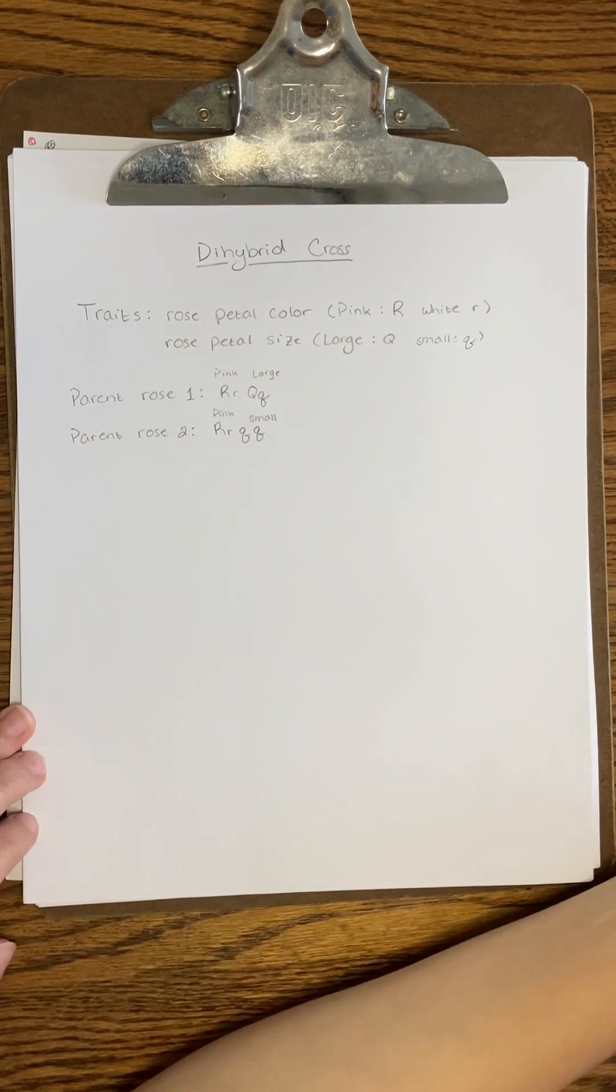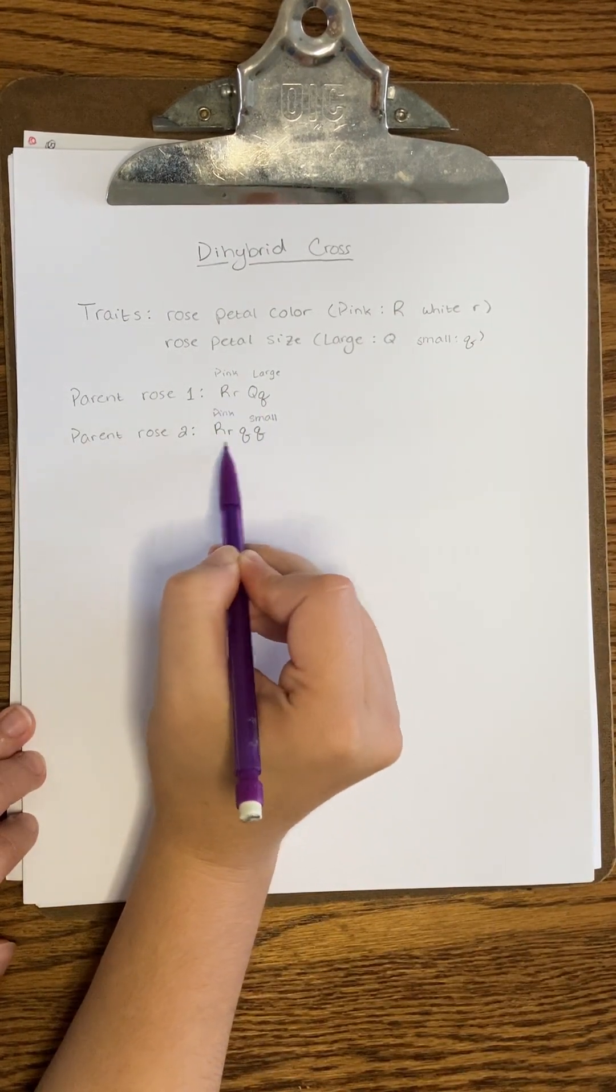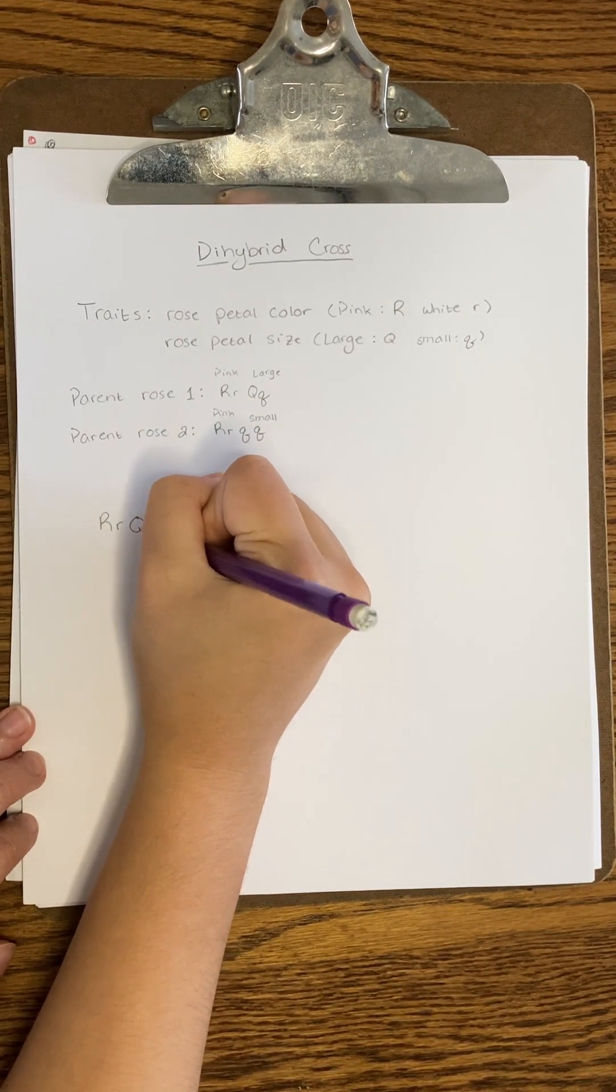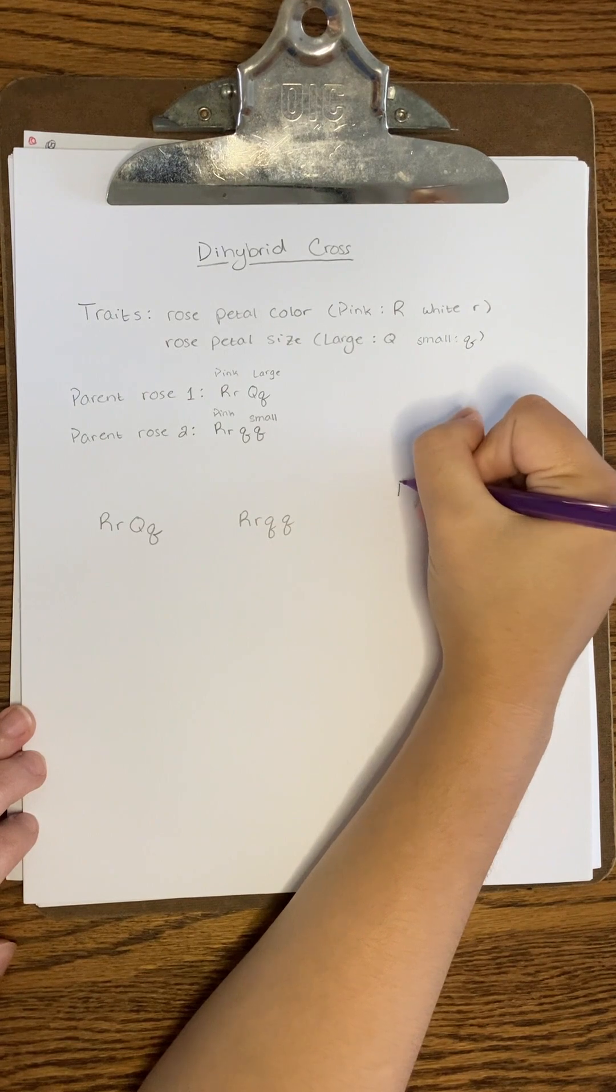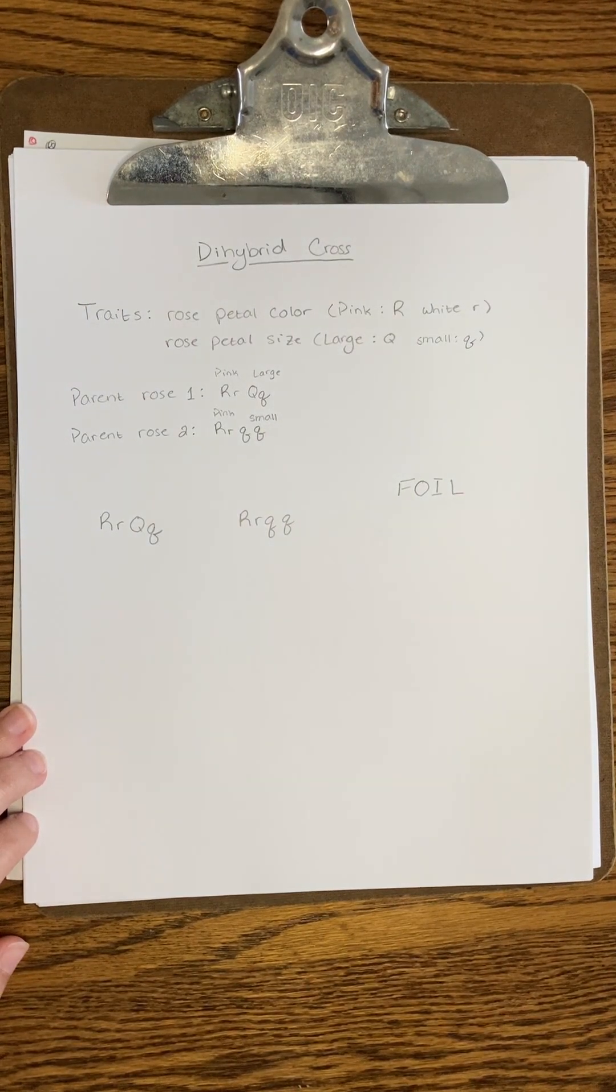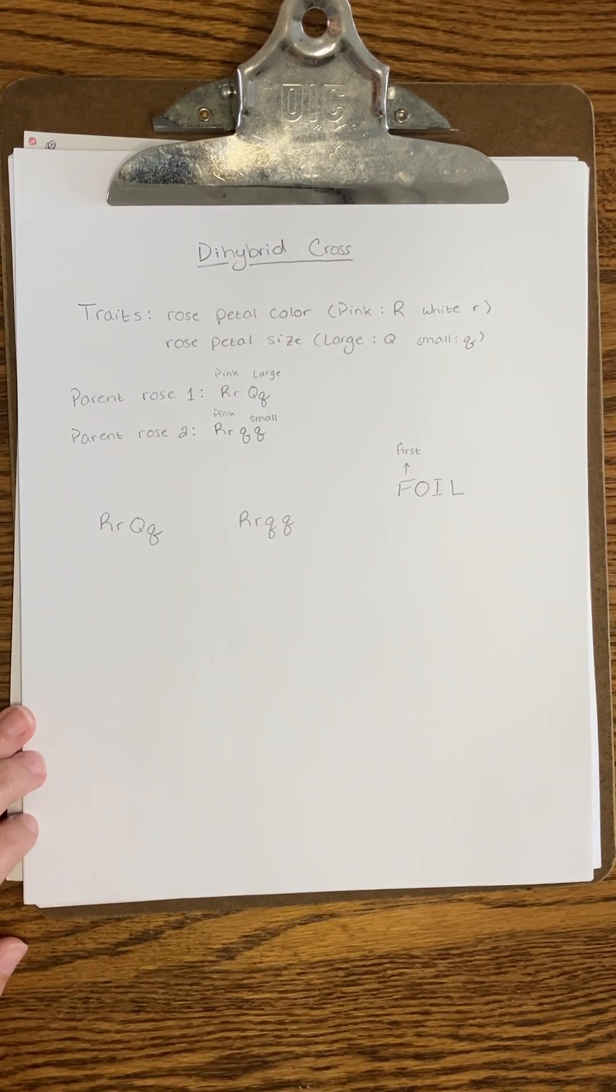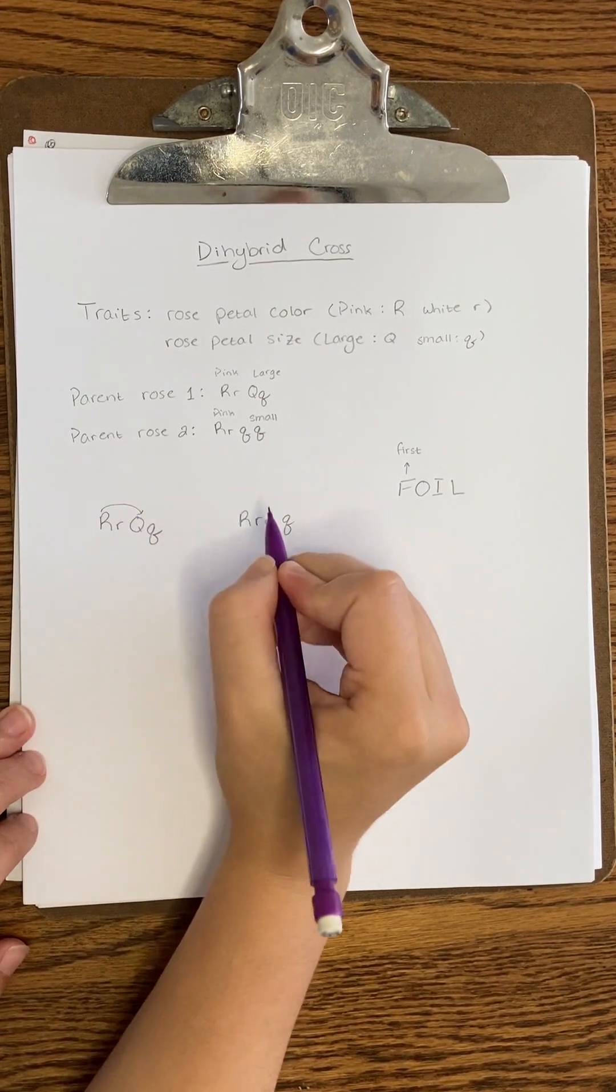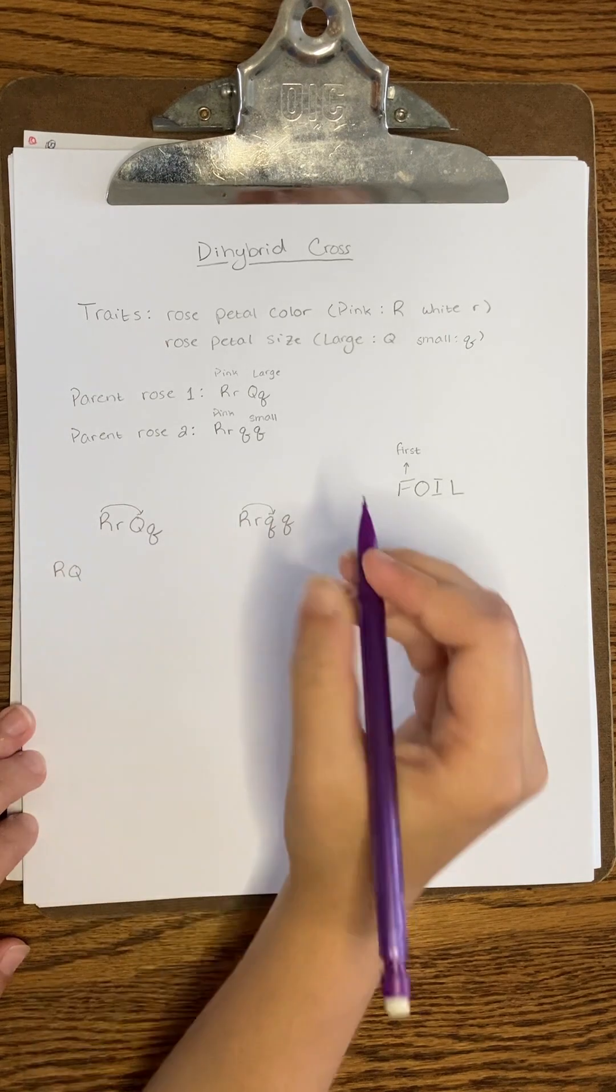Dihybrid crosses require an extra step. So, first we're going to line up the parent genotypes. And we're going to use something called the FOIL method to determine the allele combination that we'll use for our Punnett square. F stands for first. So we will combine the first of each of the two letters that show up for each parent. For parent one, this would be capital R, capital Q. And for parent two, this would be capital R, lowercase q. O stands for outside, so we will combine the two outer alleles that show up for each parent. For parent one, this will be capital R, lowercase q.